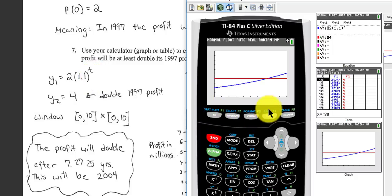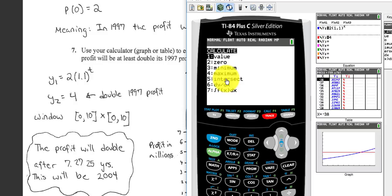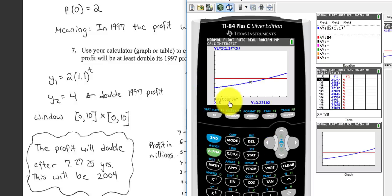Press 2nd. Above trace, it says Calc, because we're calculating the intersection, which is number 5. There's only two curves, so I can press enter, enter, enter, and you see it says intersection of 7.27, 7.27.